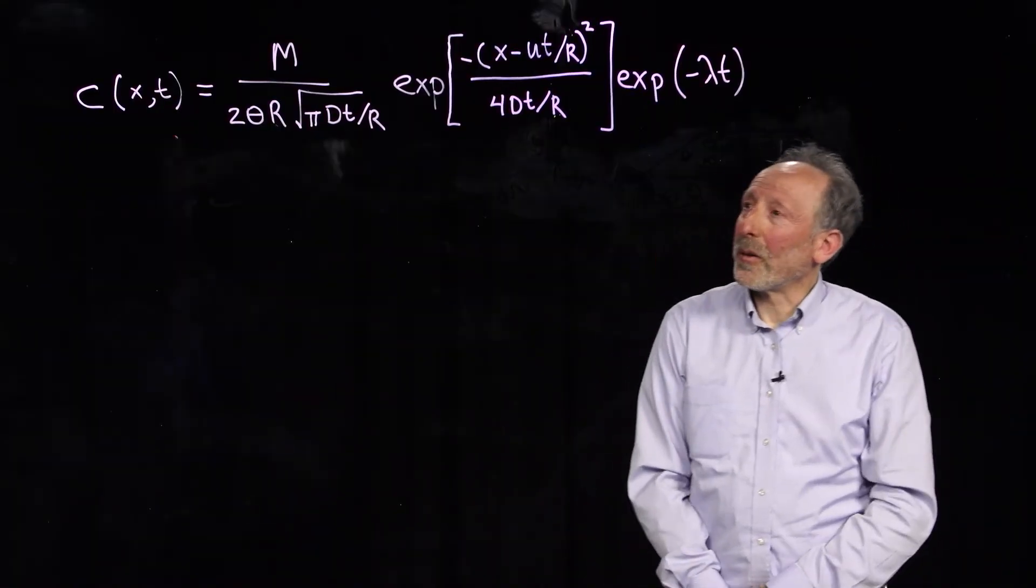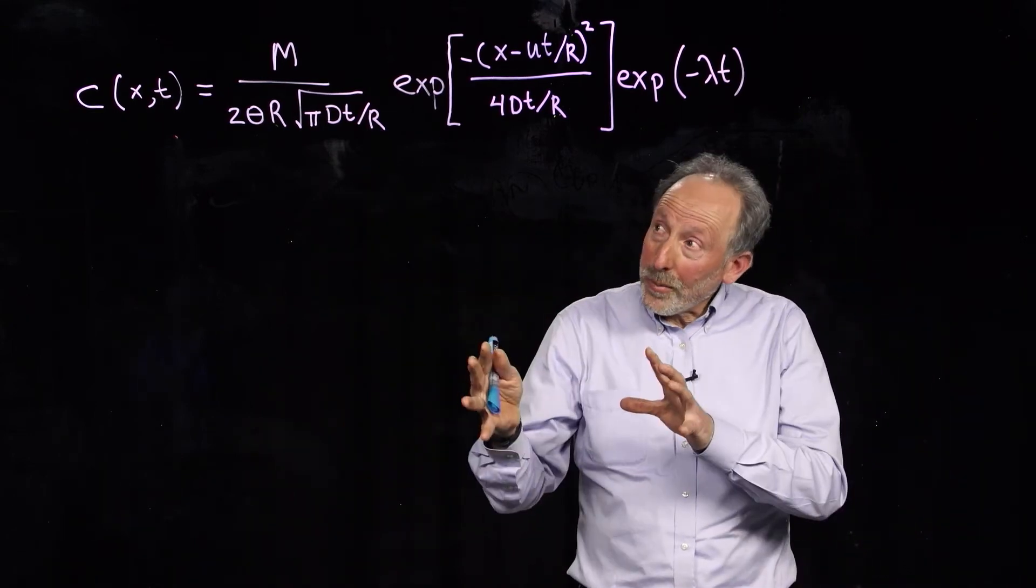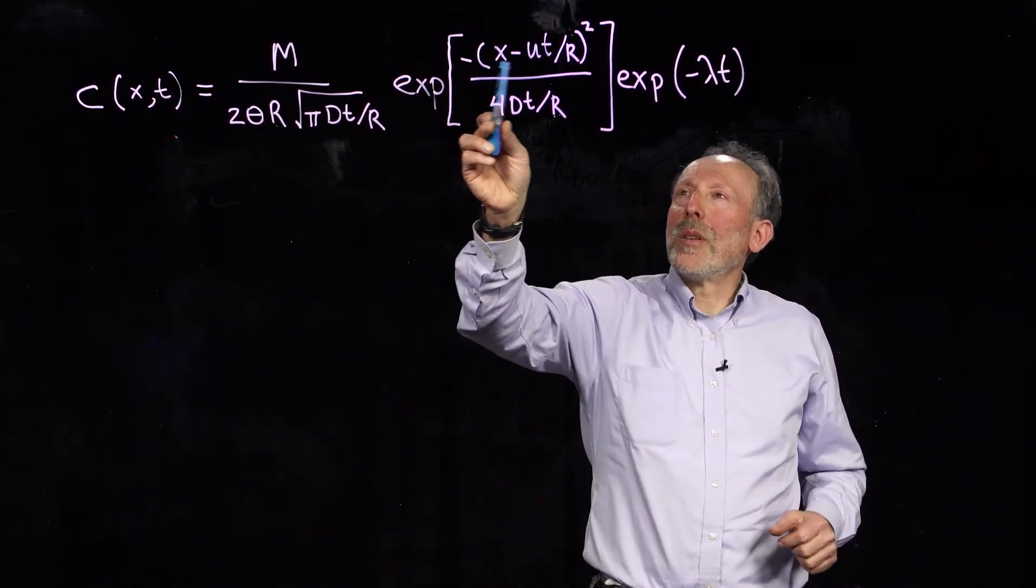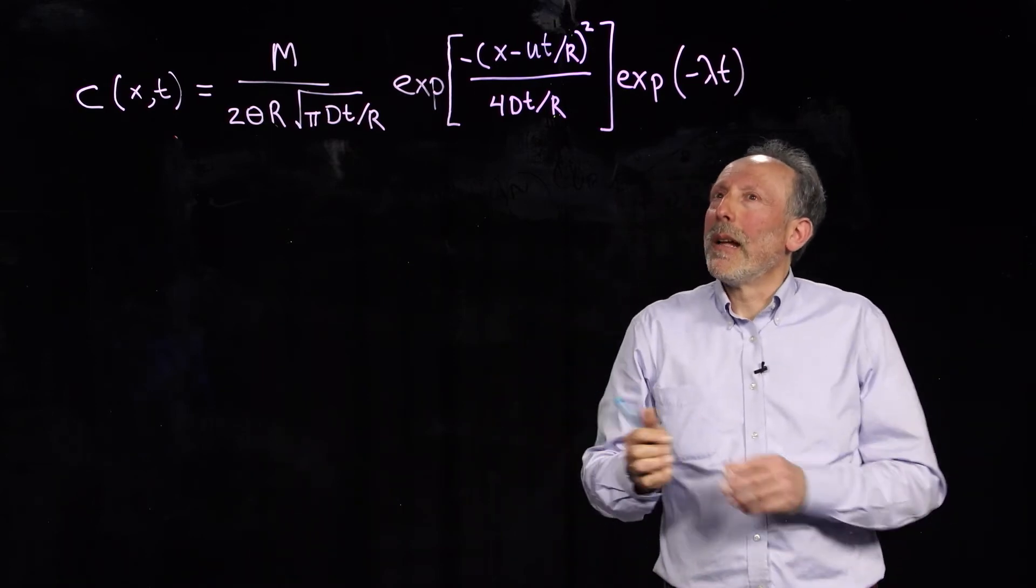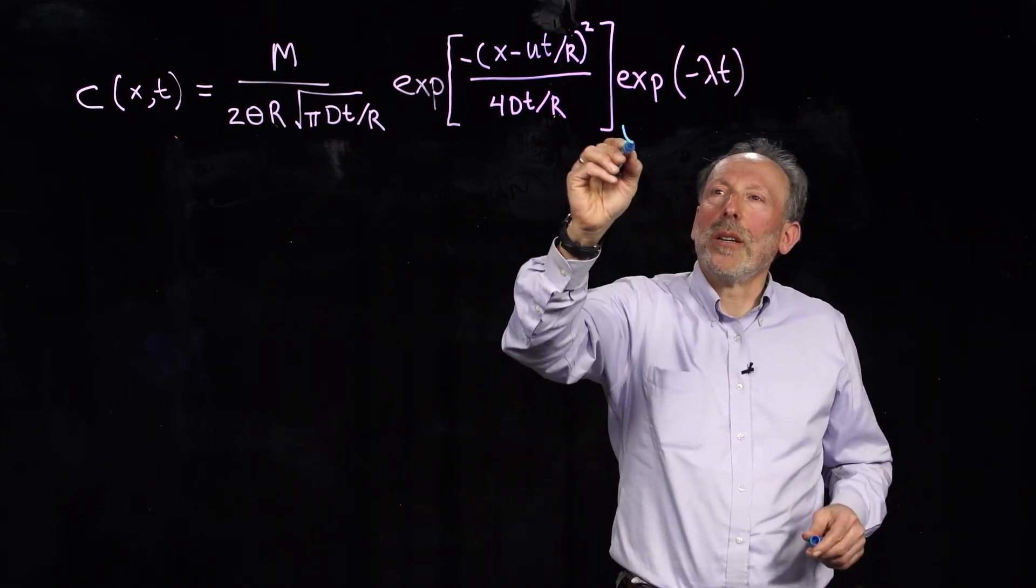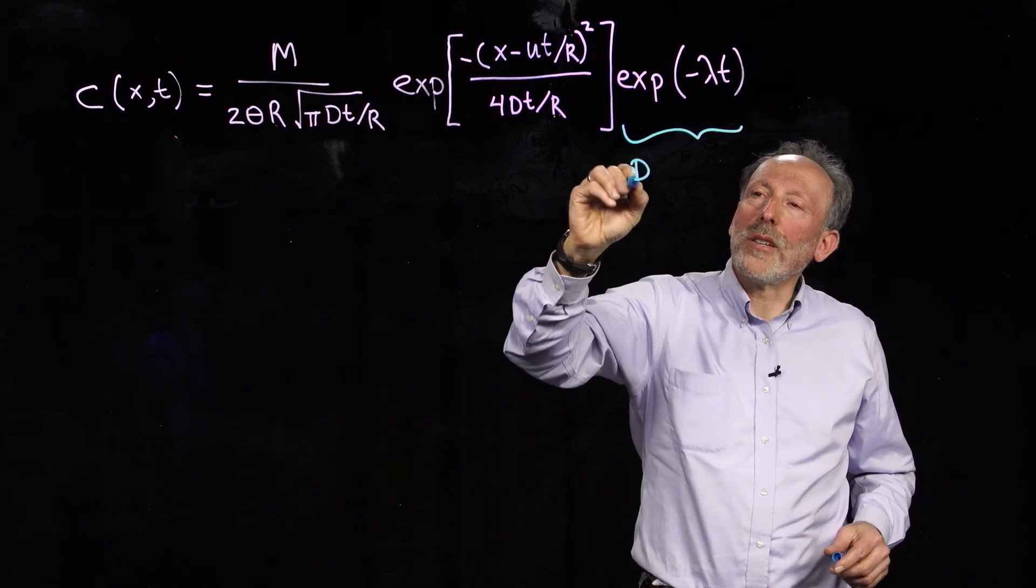So, again, looking at the advection-dispersive equation, we've talked about retardation, which has to do with absorption. We've talked about how the plume spread in time and space, but what is this last term here? And this is what we'll call the degradation term.